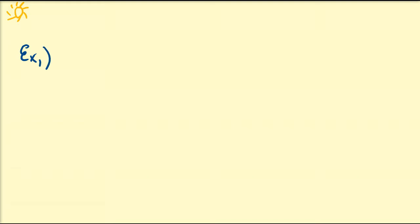Hello there. In this video we're going to go through a couple of examples that summarize all the different types of transformations that can be performed on some function. So let us assume we want to sketch the graph of f(x) = -3(x-2)² + 7. So let us identify what is going on here.